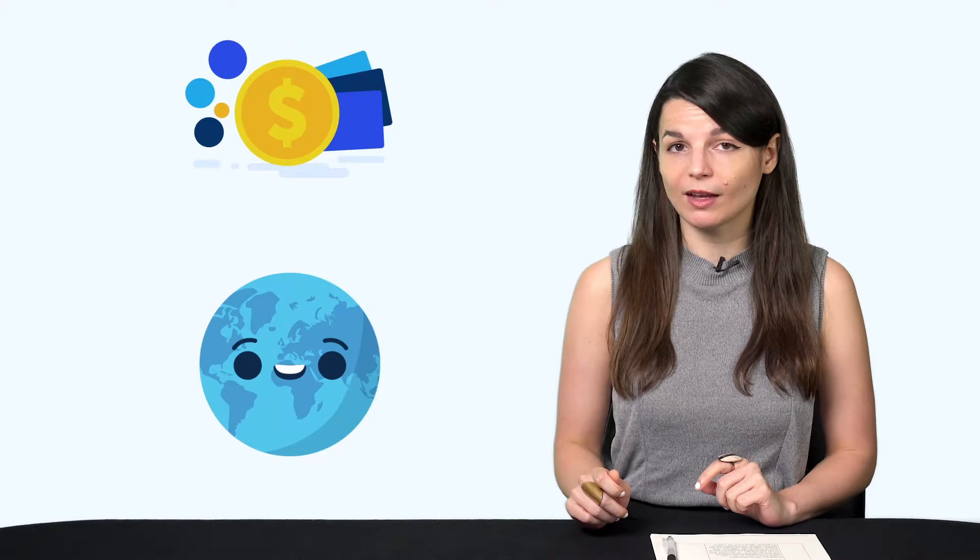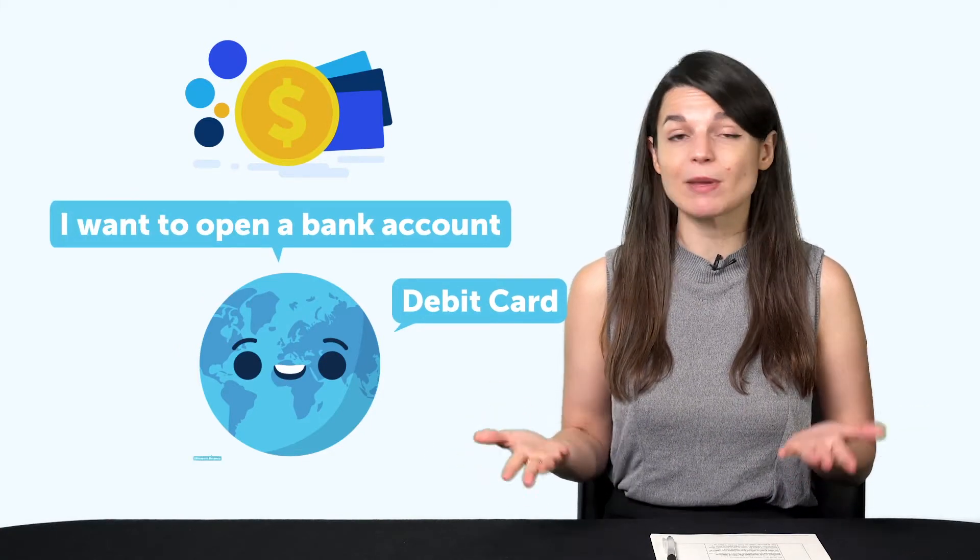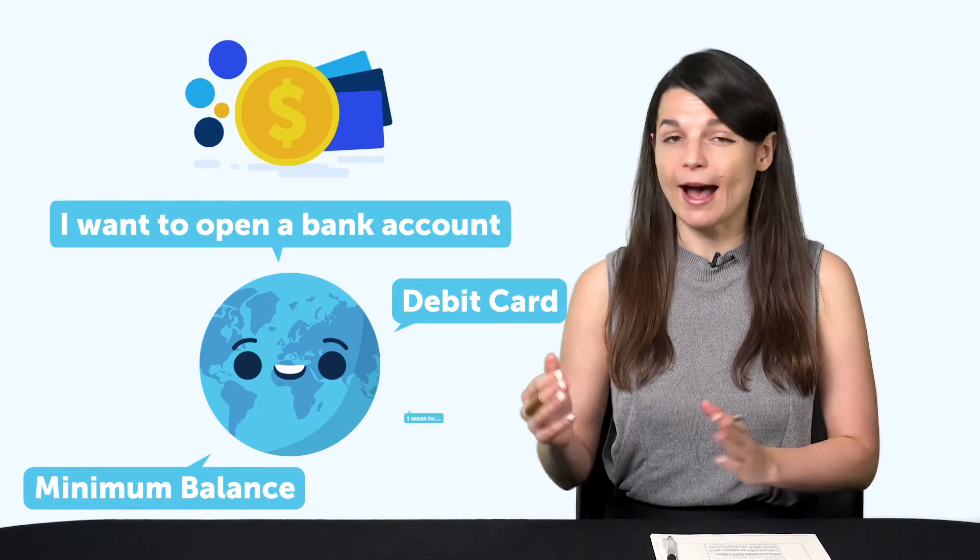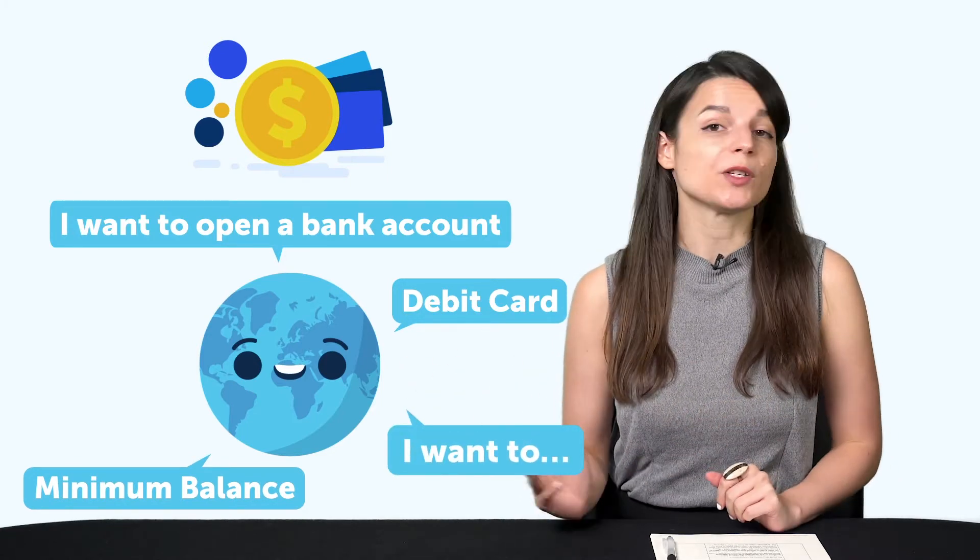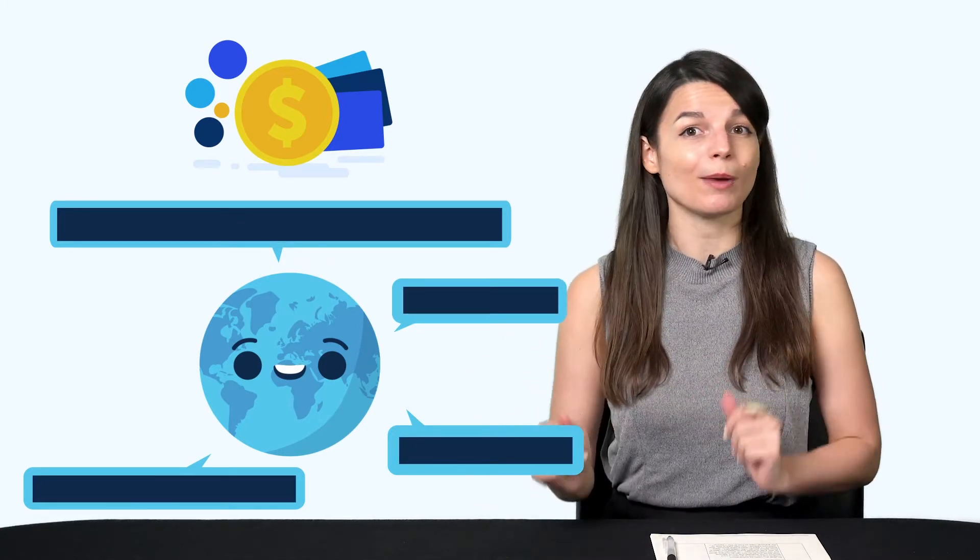Imagine that you have to go open a bank account in the language that you're learning. How would you do it? You can go in there, grunt, and use body language. Or you can first come up with a list of words and phrases you need to know before you go. Like, debit card, bank account, I want to open a bank account, and minimum balance. You may want to look up the grammar rules for how to say, I want to. Once you know these words and phrases, you translate them into your target language, and you go over to the bank to open an account.